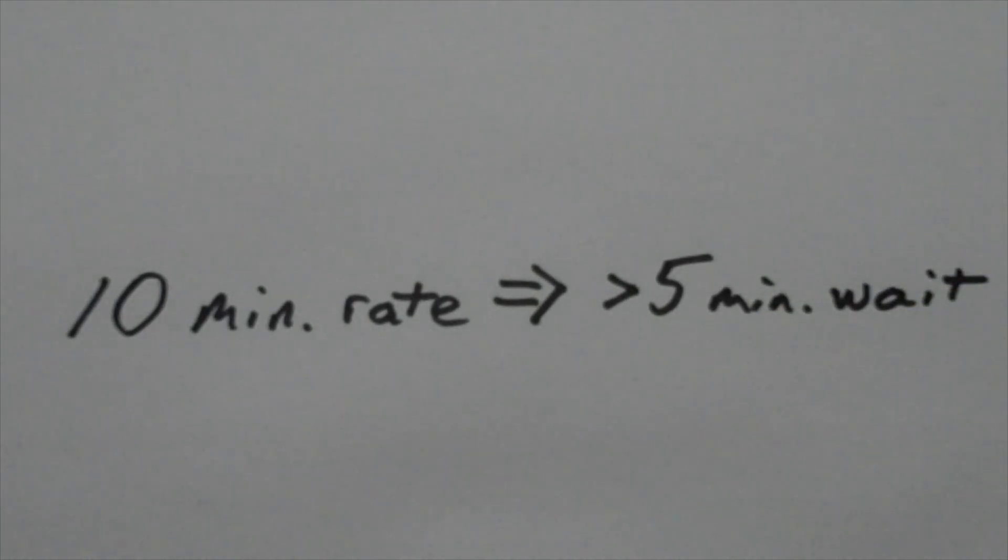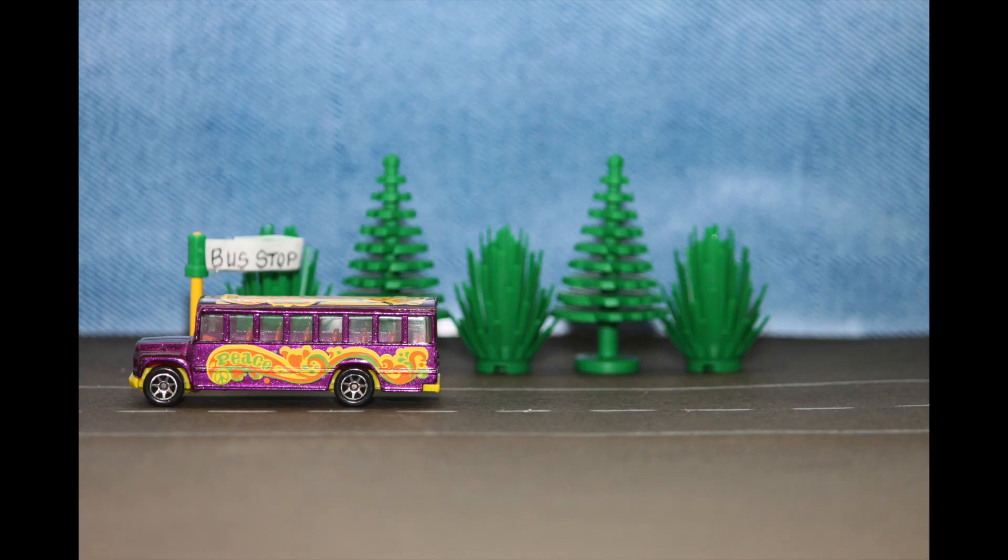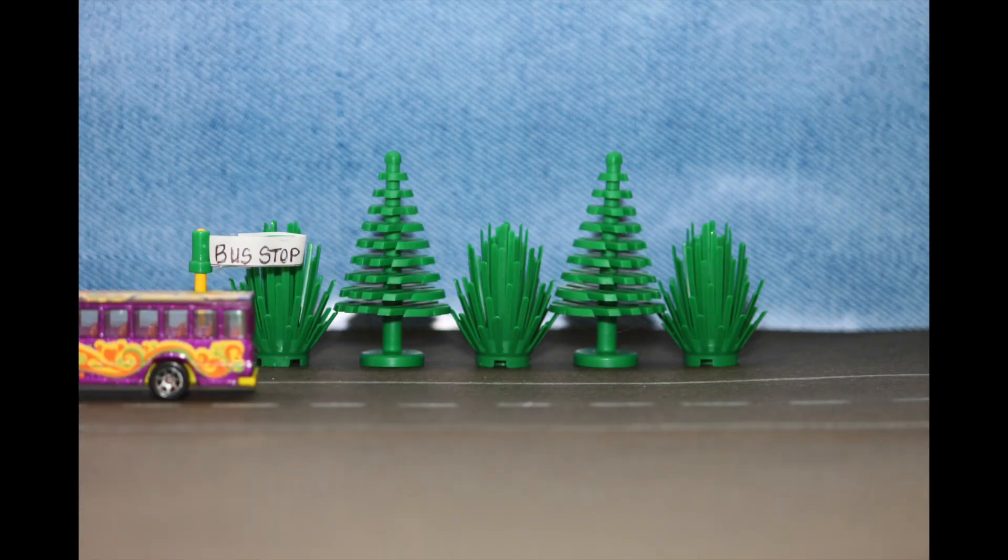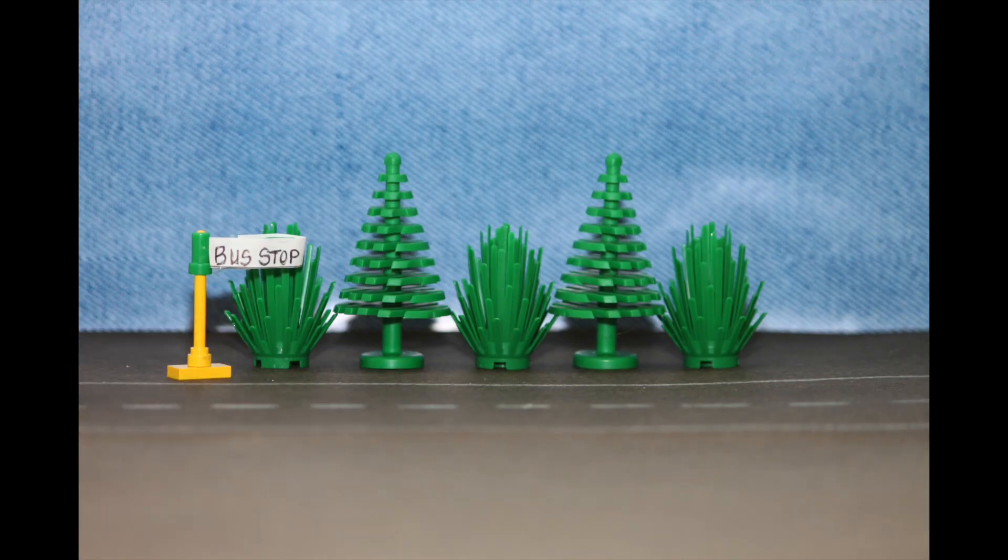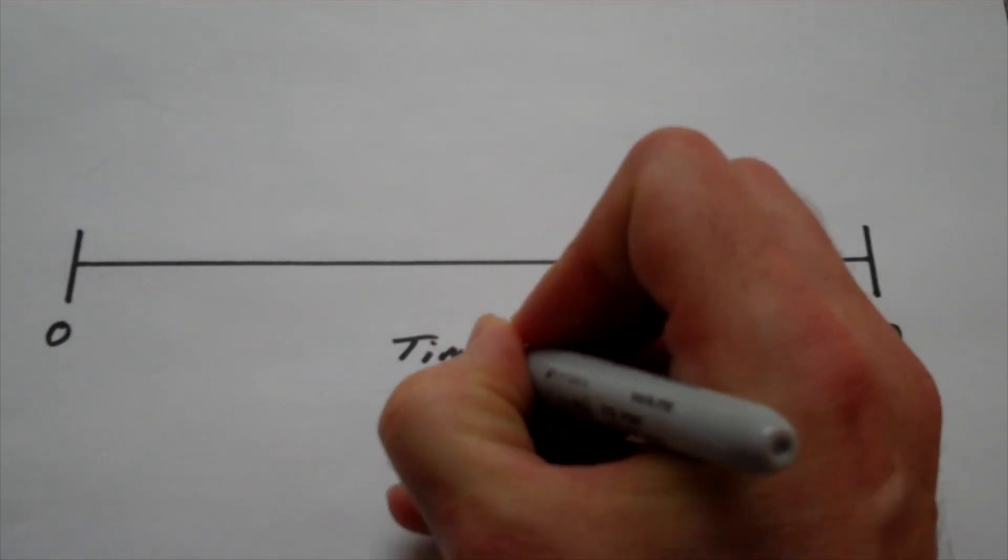Let's try an example. Suppose that six buses are going to arrive at your stop during the next hour, and we know that the last bus arrives at the end of the hour. Now suppose that during the first ten minutes, a bus comes every two minutes.